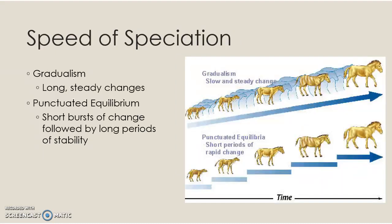Now we have to talk about how fast speciation happens, and this is a really important idea. A lot of people think when I show pictures of the birds — next generation, new bird — but that's not what happens. This is over a long period of time. We have two different ways that we think evolution may happen, and we don't actually know which one is more accurate. Gradualism is very slow and very steady.